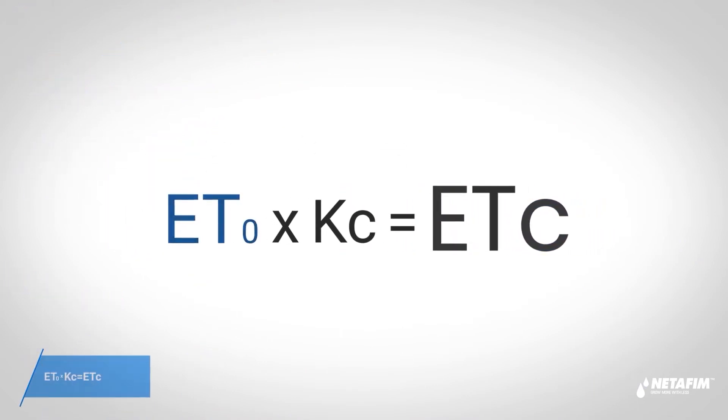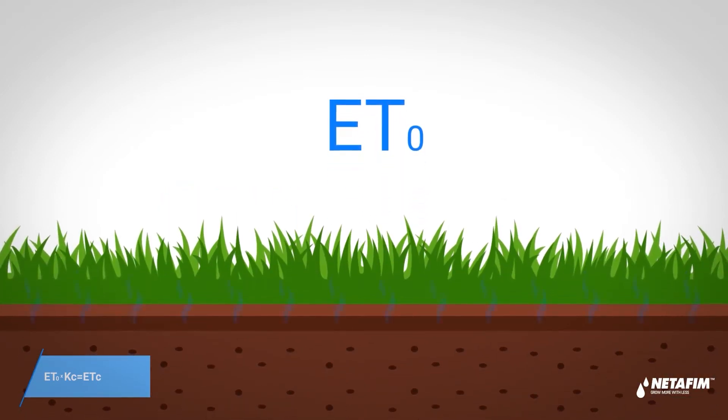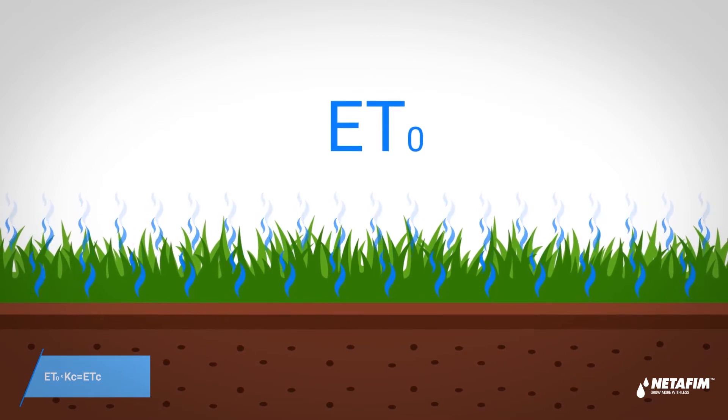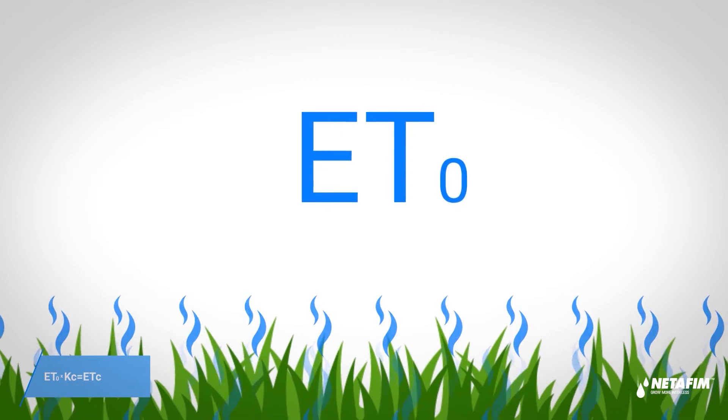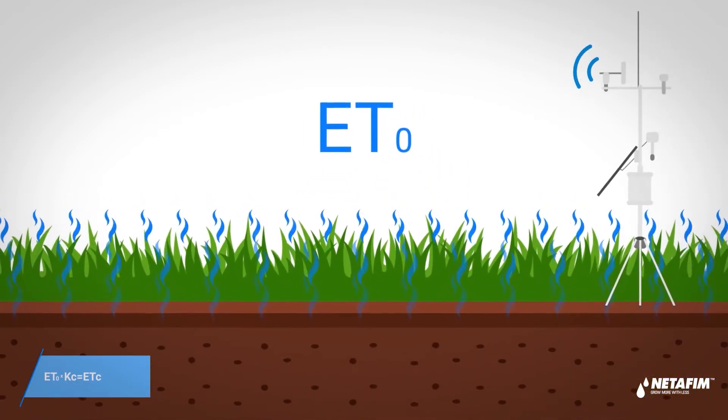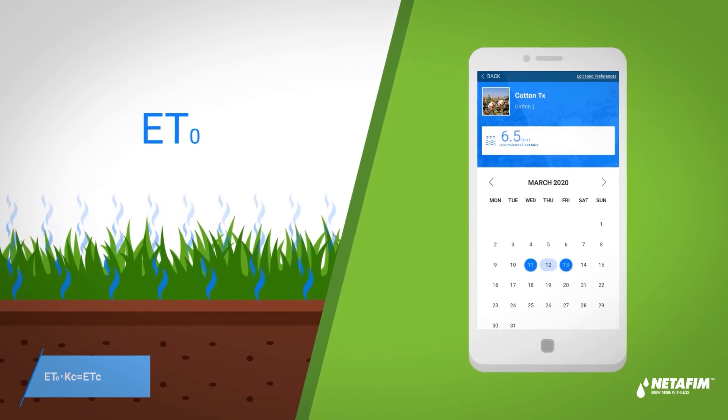The measured value of ET is called ETO. This represents the evapotranspiration from a standardized vegetated surface of grass. Where do you get the ETO values from? Either from a weather station located in your farm or from the Netafim ETO application.